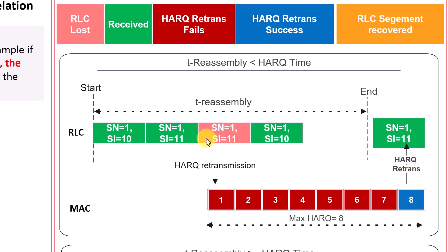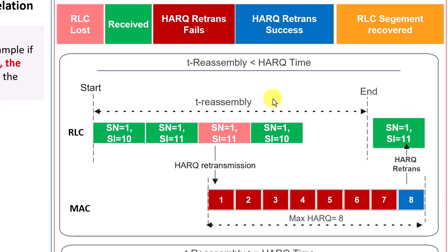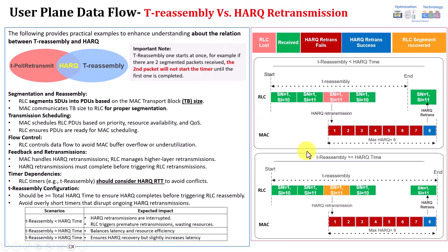At attempt number eight, the packet was successfully received and HARQ was able to successfully recover the data. It will now send the missing segment to recover sequence number one, which was lost. However, it's being sent after the T-Reassembly timer has already expired. This means HARQ was useless in this case, because once the timer expires, RLC retransmission starts — the RLC receiver already sent a NACK to the transmitter, indicating it didn't receive that segment from the RLC perspective.